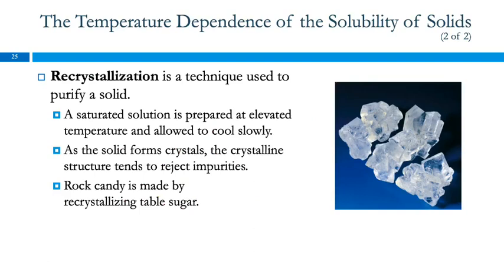Recrystallization can be used to purify a solid. You make a saturated solution at an elevated temperature, you cool it down slowly. The crystals form slowly and they tend to reject impurities and form more perfect crystals and more pure crystals. This is some rock candy, and rock candy is made by recrystallizing table sugar. You can try that at home, but be sure to look up a recipe because if you don't get the proportions right, it's not going to work.